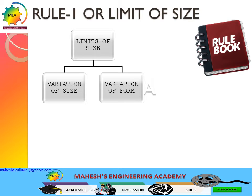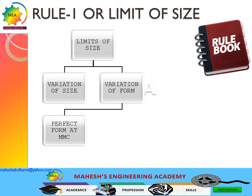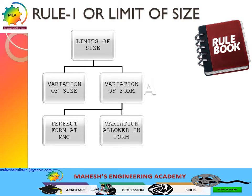For variation of form, there are three cases. The first case is perfect form at MMC — that means when the part is produced at MMC (Maximum Material Condition), the form should be perfect. The circularity, straightness, cylindricity, and flatness should all be perfect when the part is produced at MMC.